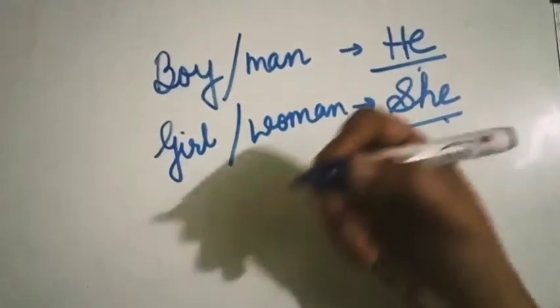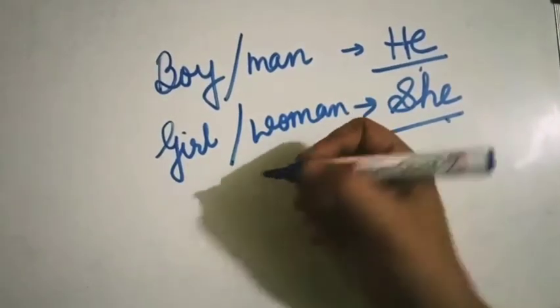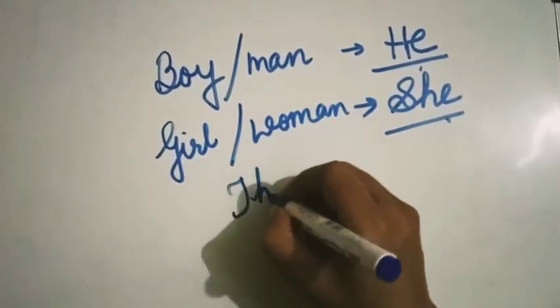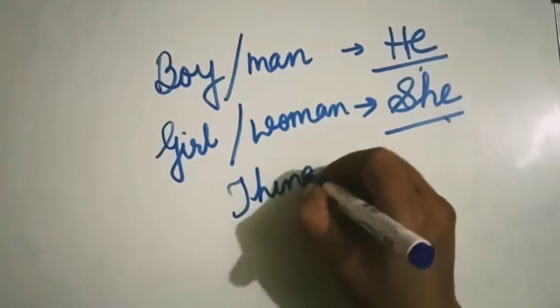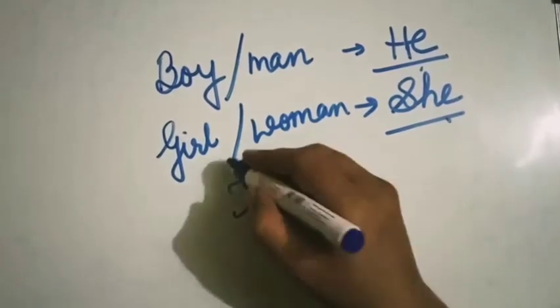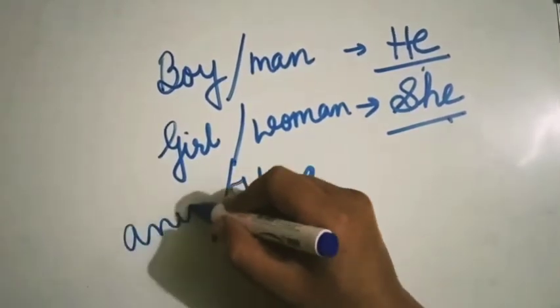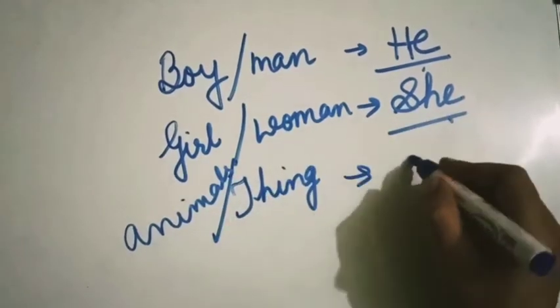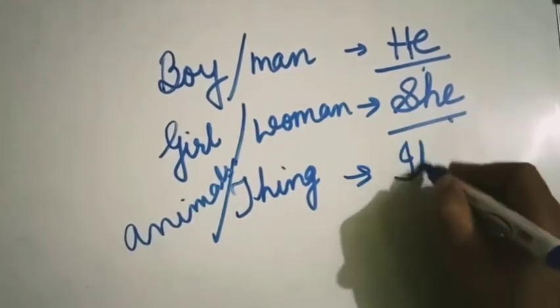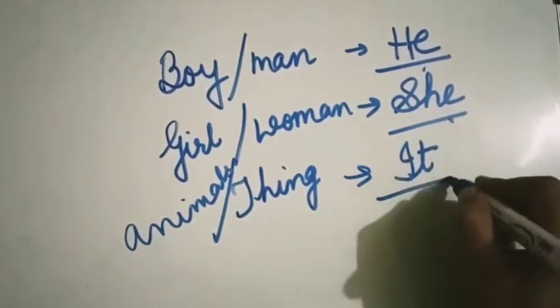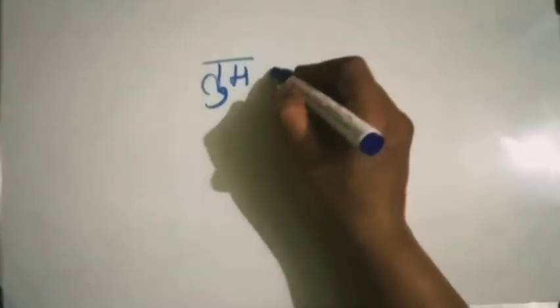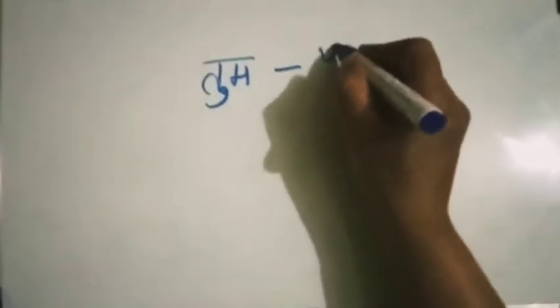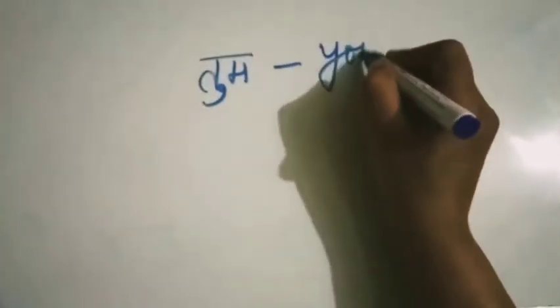And when we talk about a thing or an animal, then we use 'it'. And when we address someone directly — for example, 'You are a good boy' — then we use 'you'.